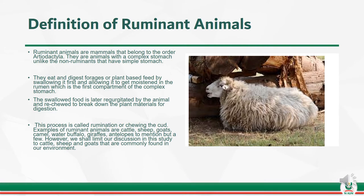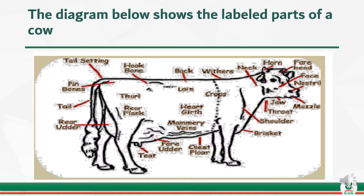We shall limit our discussion in this study to cattle, sheep, and goats that are commonly found in our environment. The diagram below shows the labeled parts of a typical cow, which you should endeavor to learn.